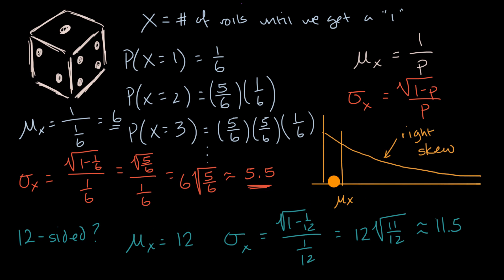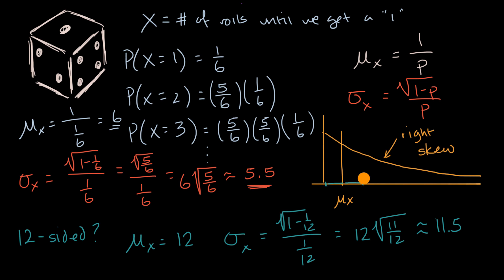With a 12-sided die you see the same pattern: the mean is 12, the standard deviation of about 11.5 goes a reasonable amount on either side of the mean — it's almost equal to the mean, and in both cases slightly lower. But then there are many, many values far to the right of the mean, giving this classical right skew for a geometric random variable.